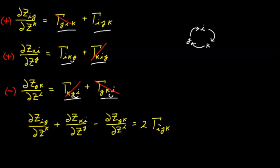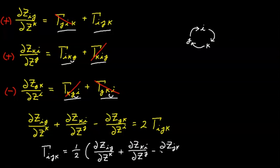All that's left is to multiply through by one half and flip sides of the equation. This gives us an explicit formula for the Christoffel symbol of the first kind in terms of the partial derivatives of the covariant metric tensor. We don't need basis vectors or dot products — it's simply the partial derivatives of the covariant metric tensor combined in this way to give us the value of the Christoffel symbol of the first kind.